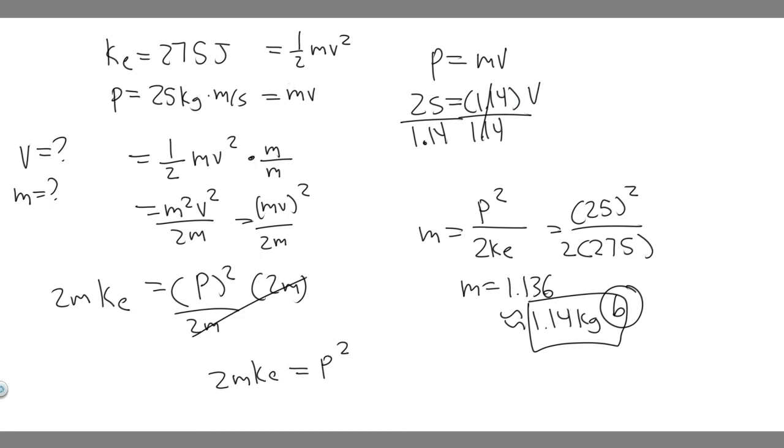So 25 divided by 1.14, and if you want to use the more exact value, you can, but they're going to be very close. So if you do this, you'll get v equals 21.9298 and so on. I'm just going to round to 22.